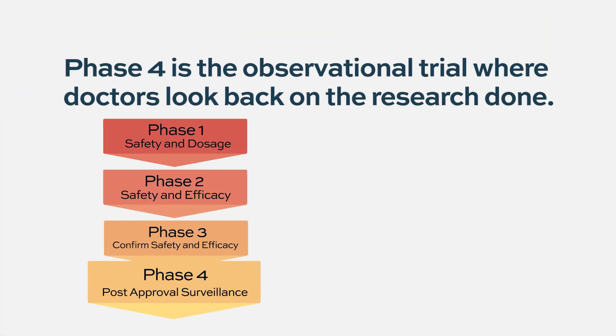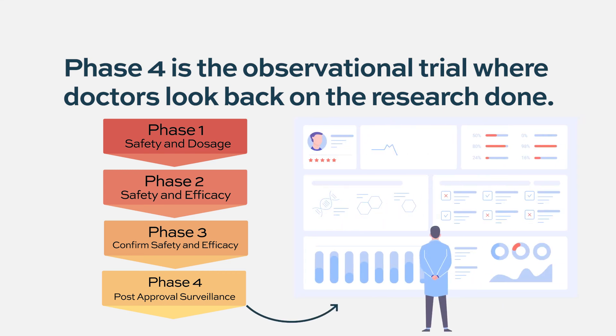There's also phase four, which many people call observational trials. You might be looking at data retrospectively to see how people tolerated certain treatments — not really a controlled trial, but looking at data. Patients may give updates on how they are doing. These can also be called registry trials, where patients aren't receiving any specific drug; people are just observing how things are going and looking at treatment patterns that may impact further trials.